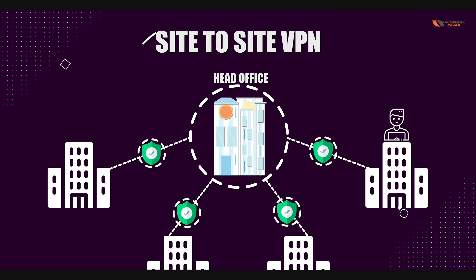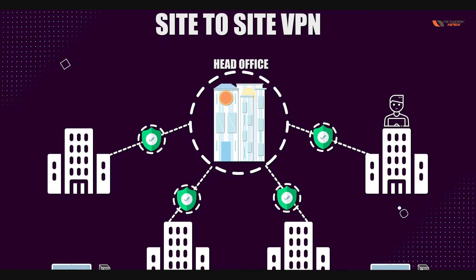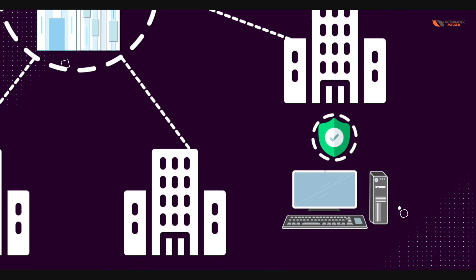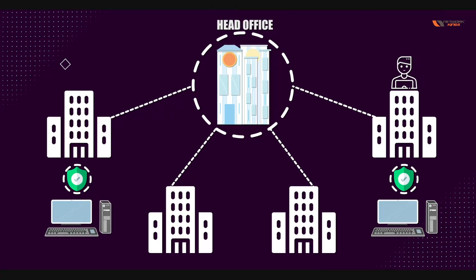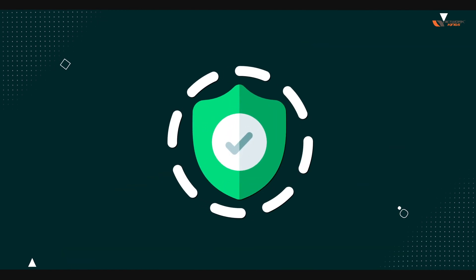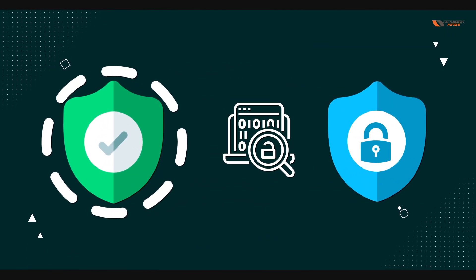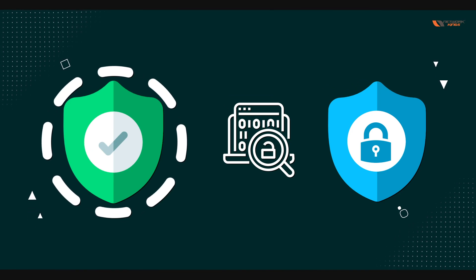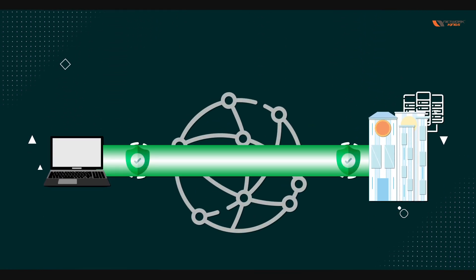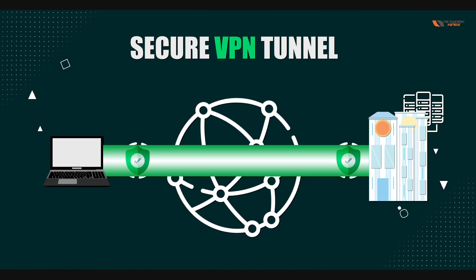When employees or mobile workers use their laptops and connect via VPN software to the head office, that VPN is called remote site VPN. VPN also encrypts the data so that nobody can access it publicly. If we are sharing data over the internet and the data is not secure, we use a secure VPN tunnel so that the data remains confidential.